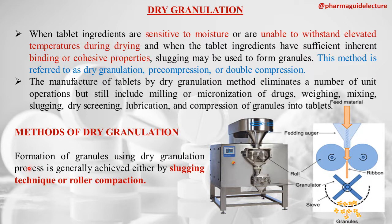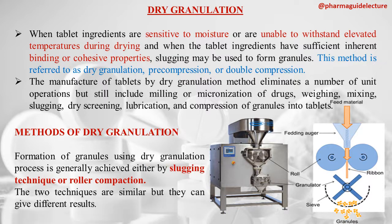Granule formation using dry granulation is achieved by two techniques: the slugging technique and the roller compaction technique. These two techniques work on the same principle but produce different results.